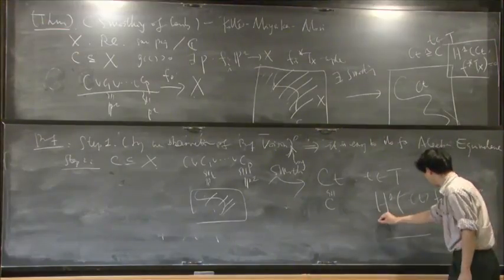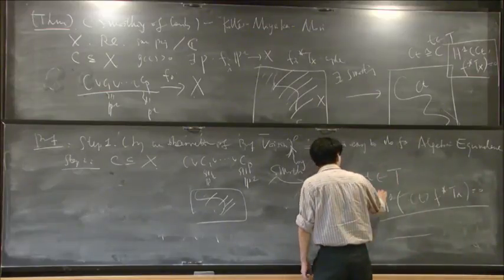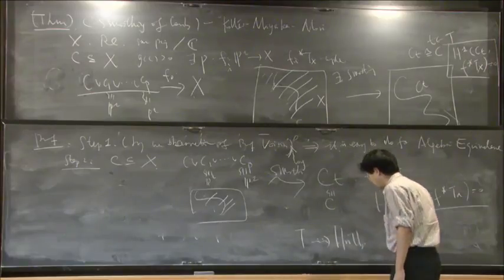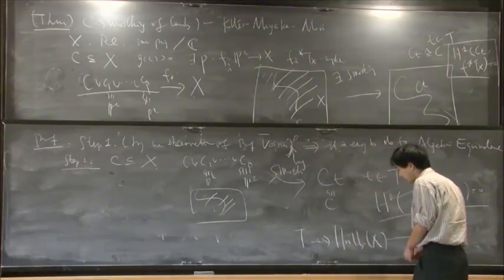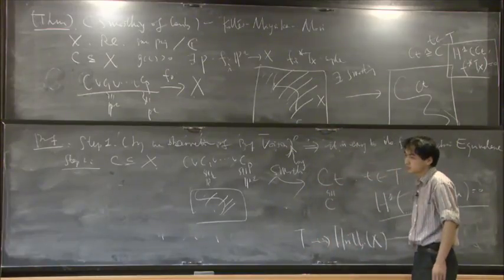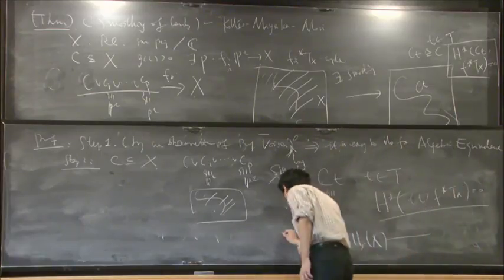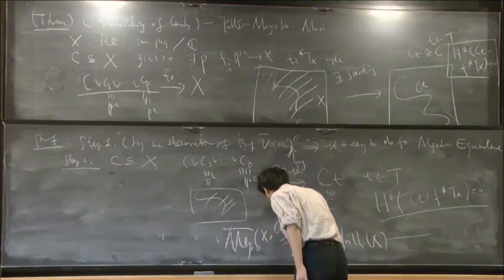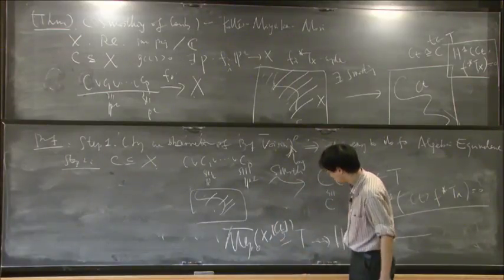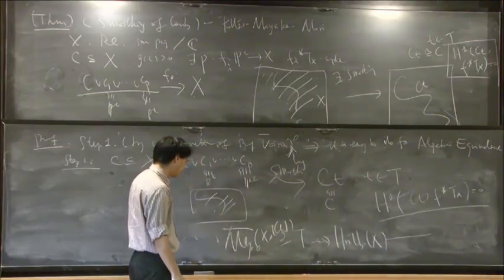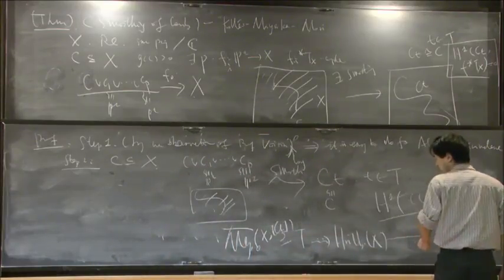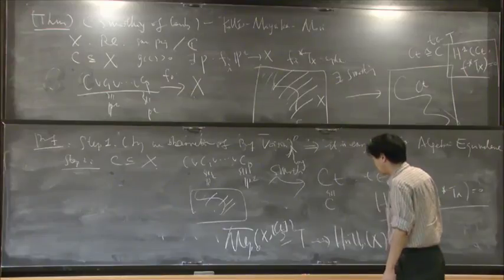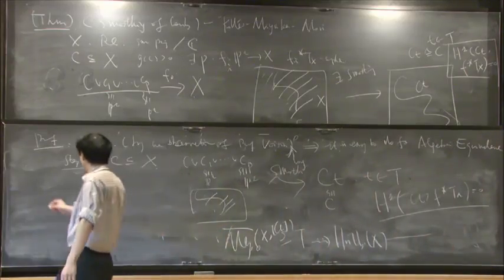C is parameterized by T, and T is birationally mapped to the Hilbert scheme of X. Since the general element of T is a stable map, we compactify T to the whole moduli space of stable maps over X. The homology class of the fiber is C ∪ C₁ ∪ ... ∪ Cₚ — that is, C plus rational curves. T can be compactified inside the coarse moduli space of stable maps, and we don't actually need the full moduli space.